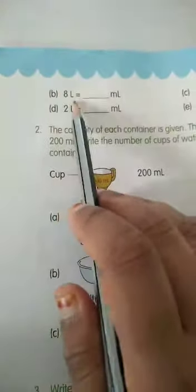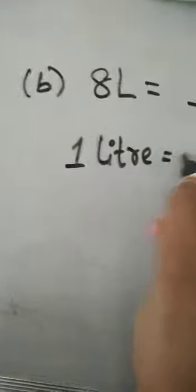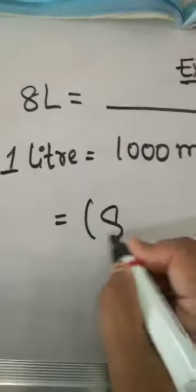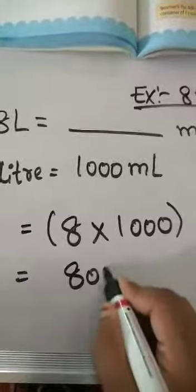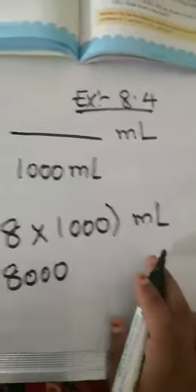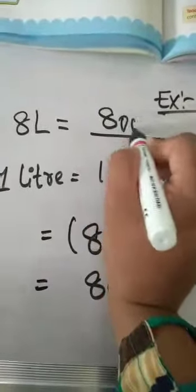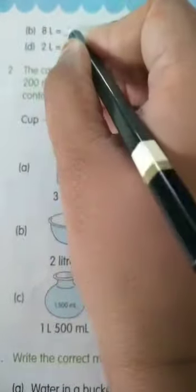Turn your page to page number 124. Second question: 8 liters equals to dash milliliters. Since 1 liter equals to 1000 milliliters, 8 into 1000 equals 8000 milliliters. So 8 liters equals to 8000 milliliters.